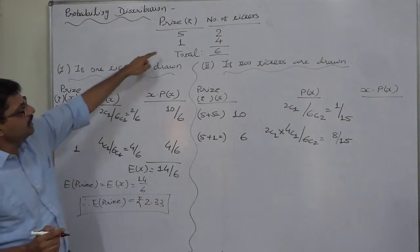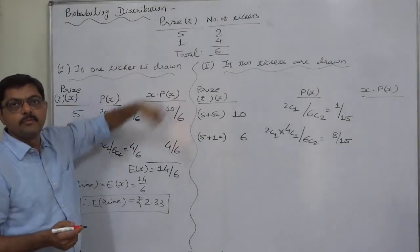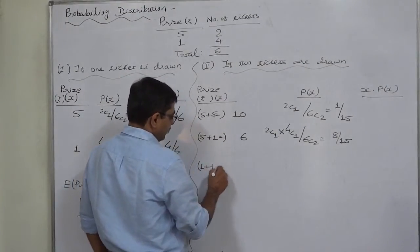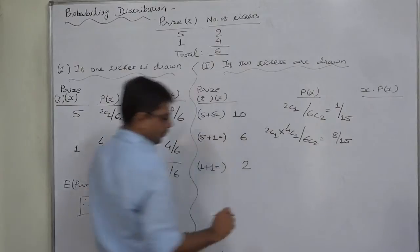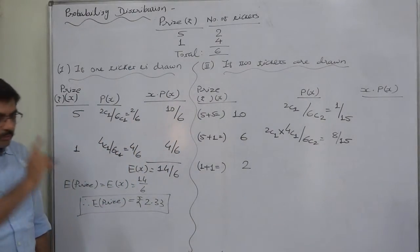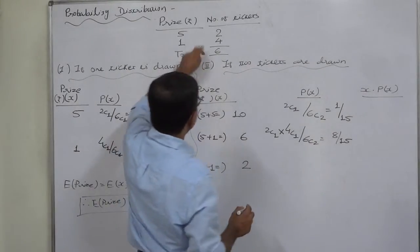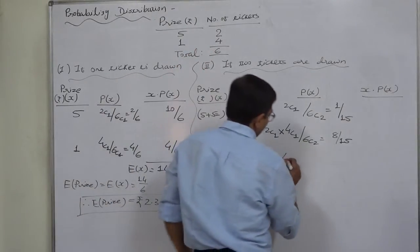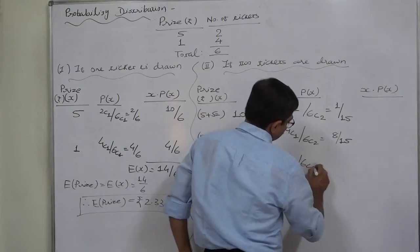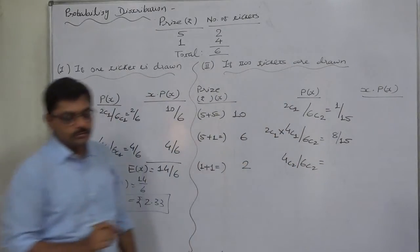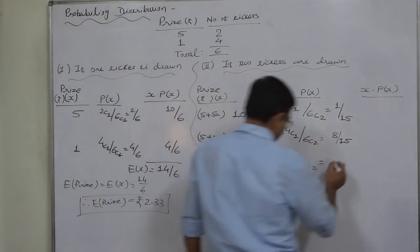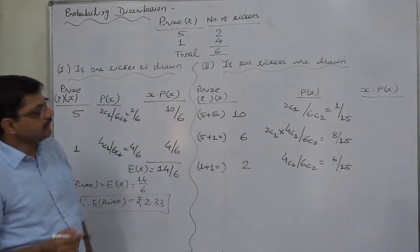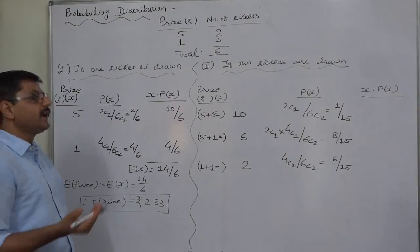The third possibility is both tickets have prize money of rupee one only, so one rupee plus one rupee gives a total price of rupees two. This happens when no ticket from the two prize-five tickets is drawn and both come from the four prize-one tickets: 4C2 by 6C2, which is 6 by 15.